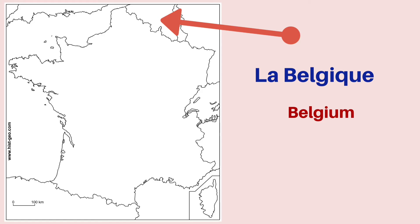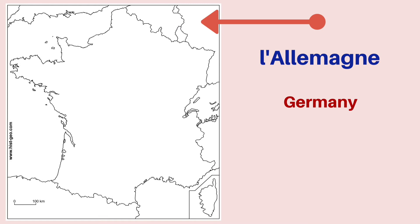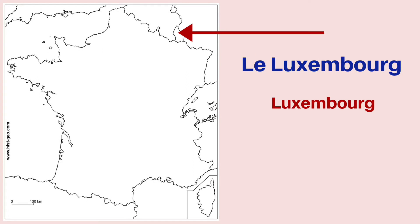Towards the north of France, you have la Belgique, which is Belgium. Towards the northeast, you have l'Allemagne, which is Germany. And nestled between these two countries of Belgium and Germany, you have a small country called le Luxembourg, which is Luxembourg.